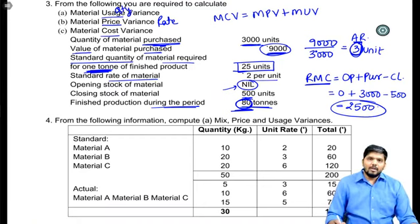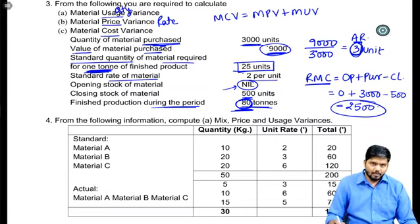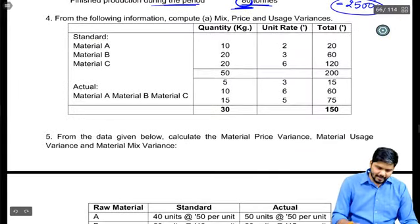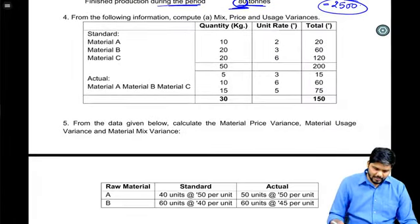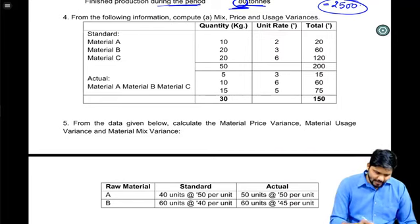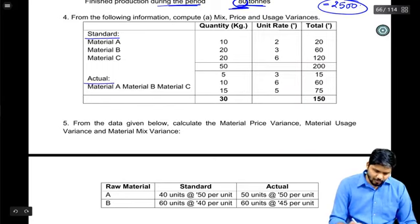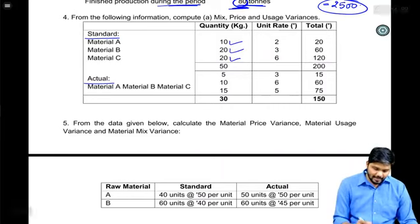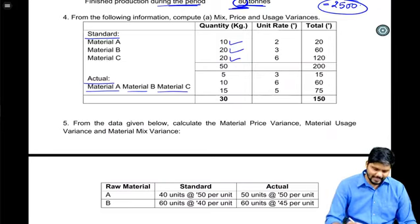Now let's go to question number 4. There is a small printing error in question 4 — please note carefully. Standard quantities given: Material A is 10, Material B is 20, Material C is 20. Actual quantities: Material A is 5, Material B is 10, and Material C is 15.